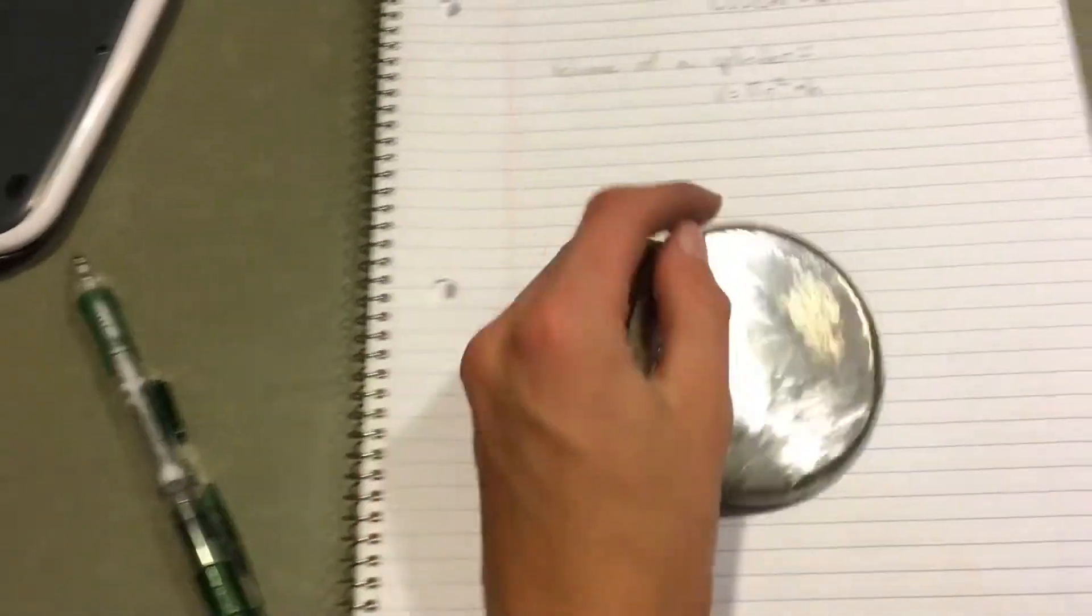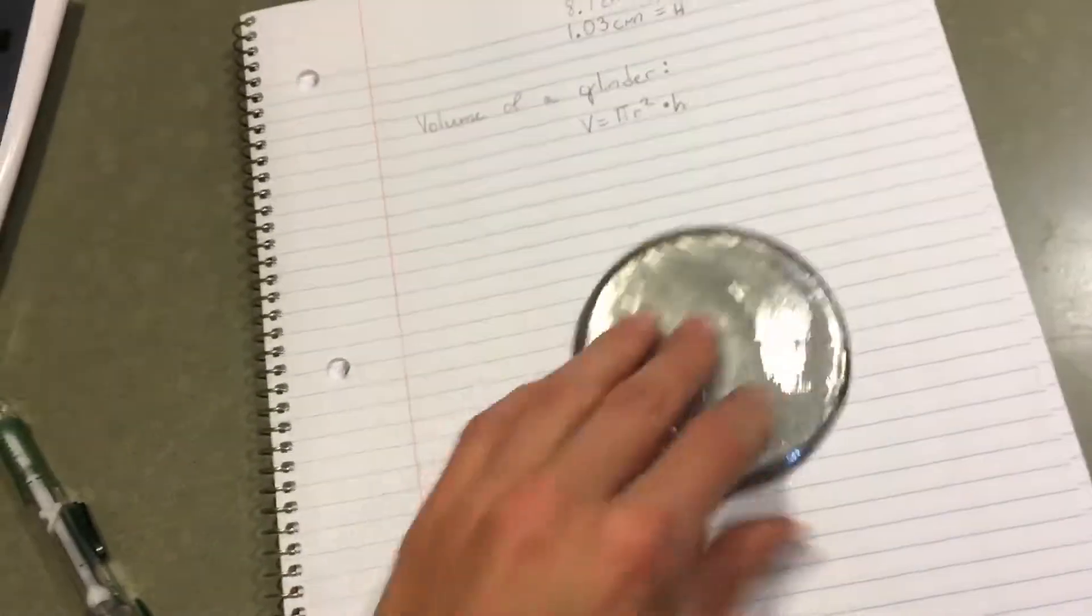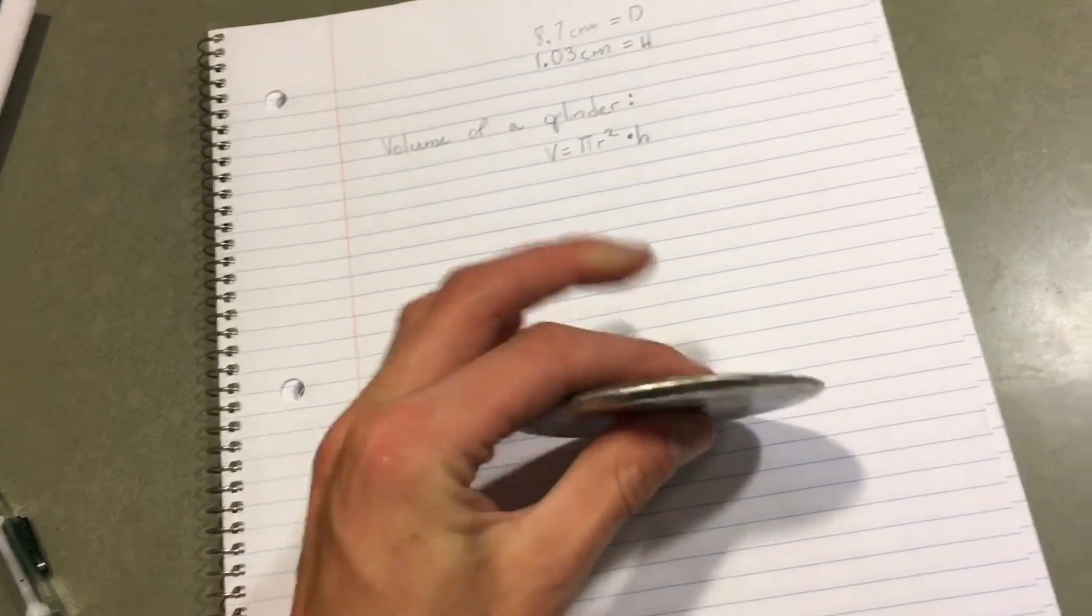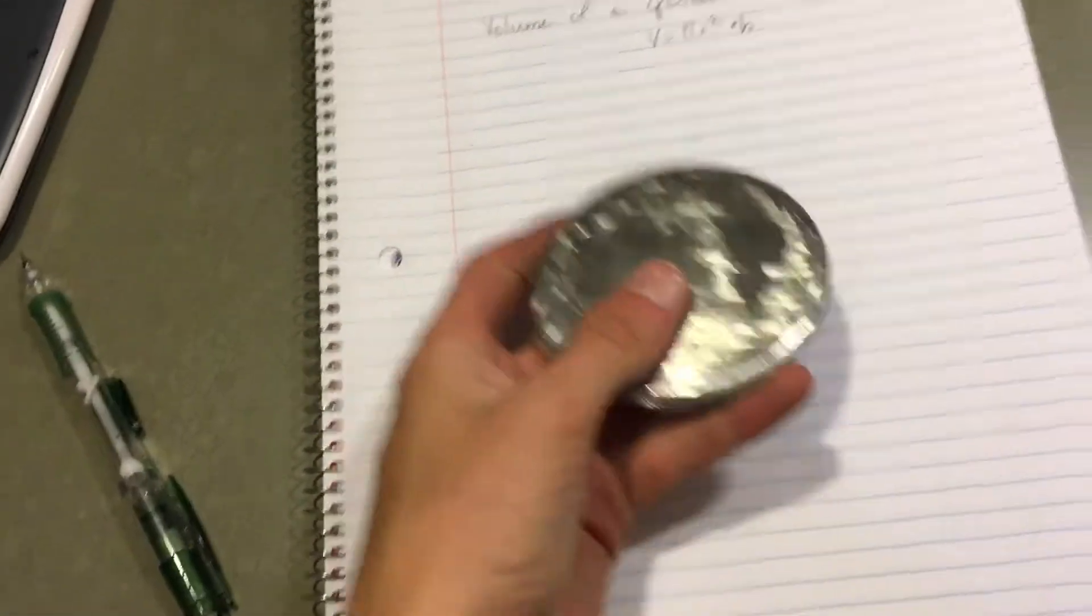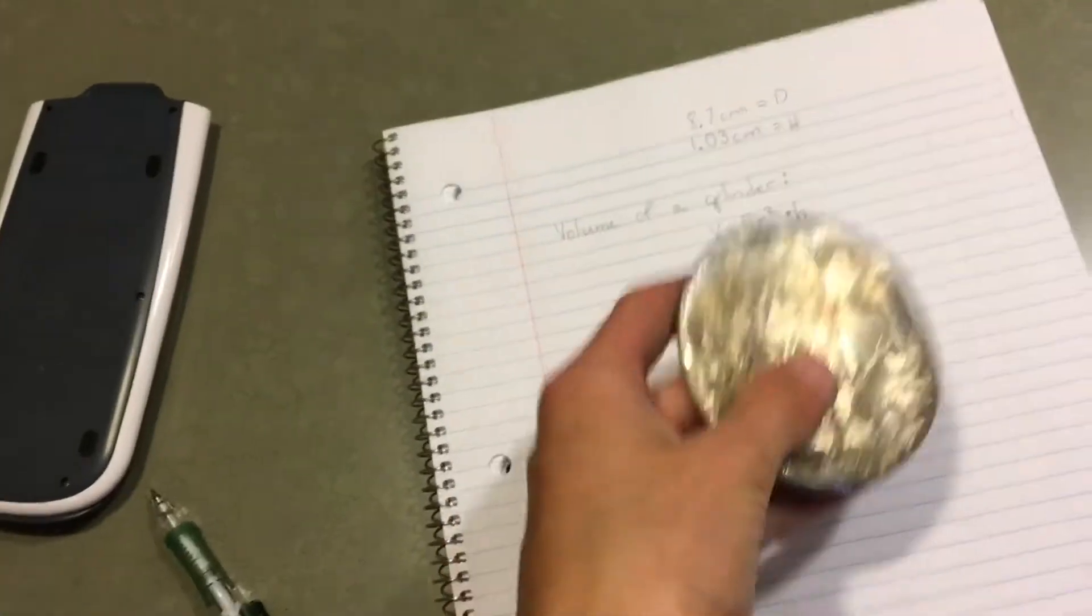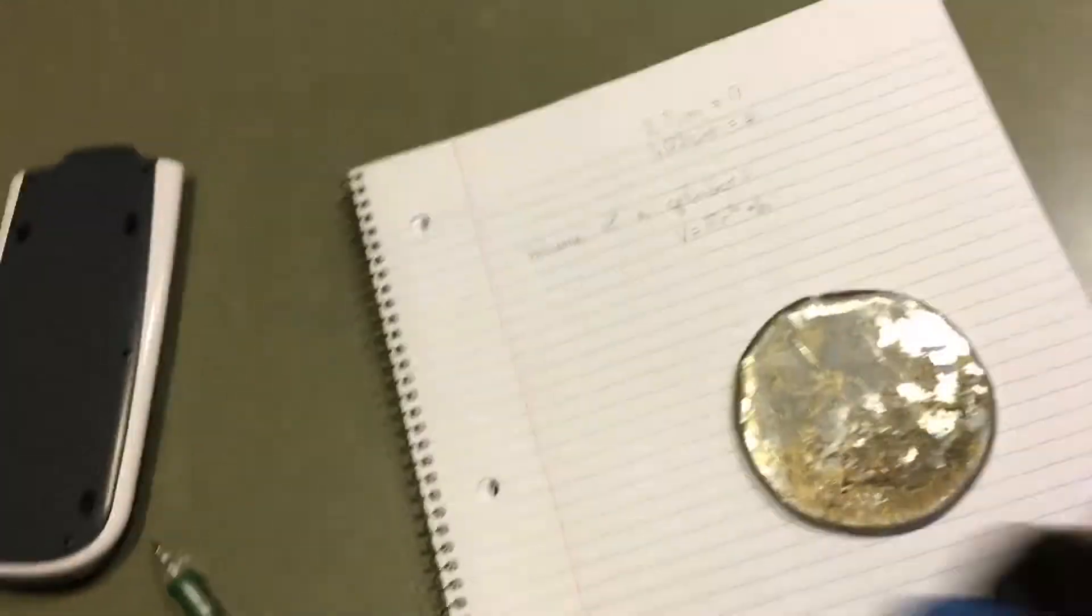This would technically be a cylinder because it has two bases that are the same size and it does have thickness. But I want to know the volume and I can't just stick this into a beaker. I don't have a beaker that large, and my beakers aren't that fine of measurement.